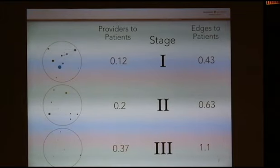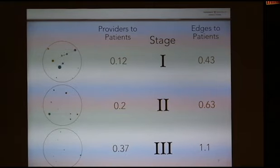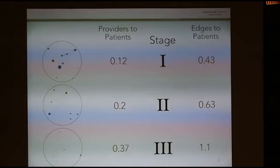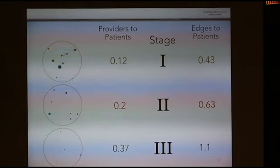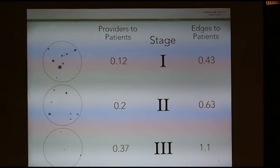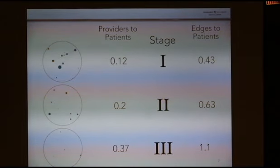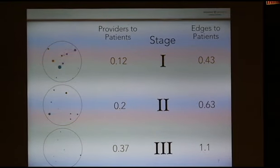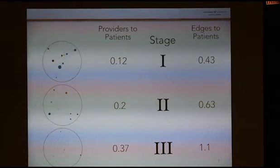Looking at the ratios of providers to patients — representing relative network size — and edges to patients — representing relative connectivity — we see that in all three stages, as stage increases, both ratios increase, signaling an increase in connectivity. This makes sense because higher stage treatments require closer collaboration between cancer providers and physicians.